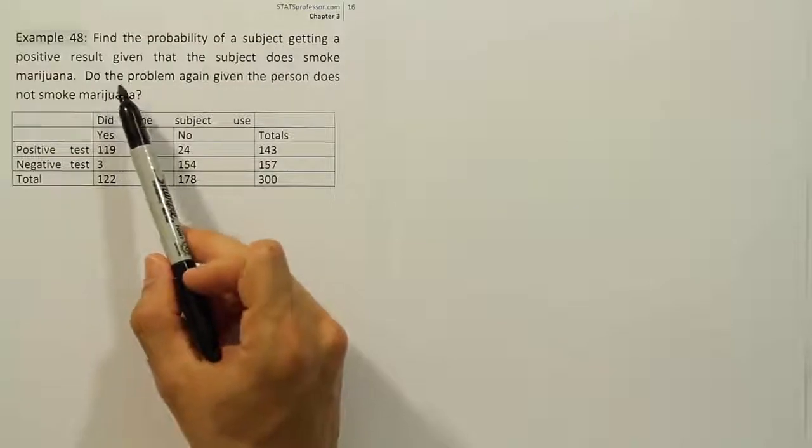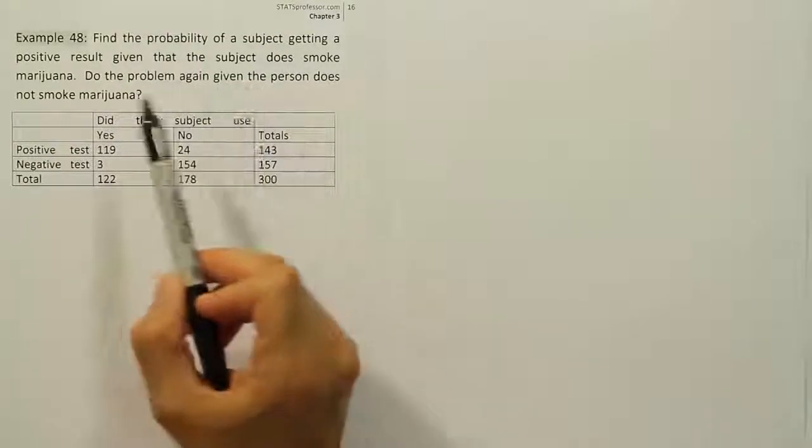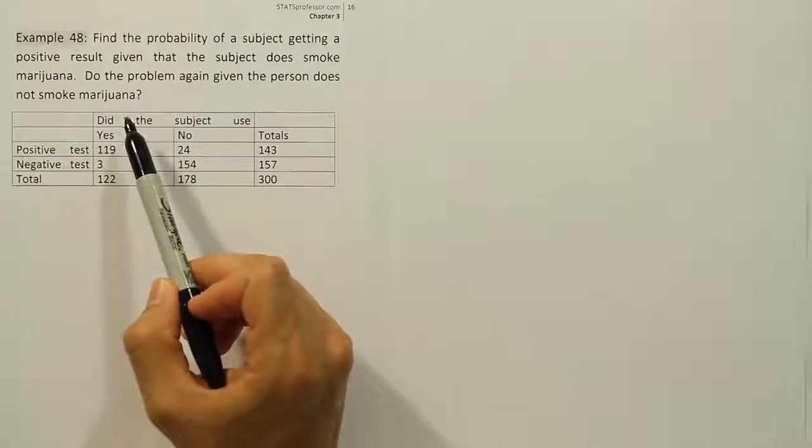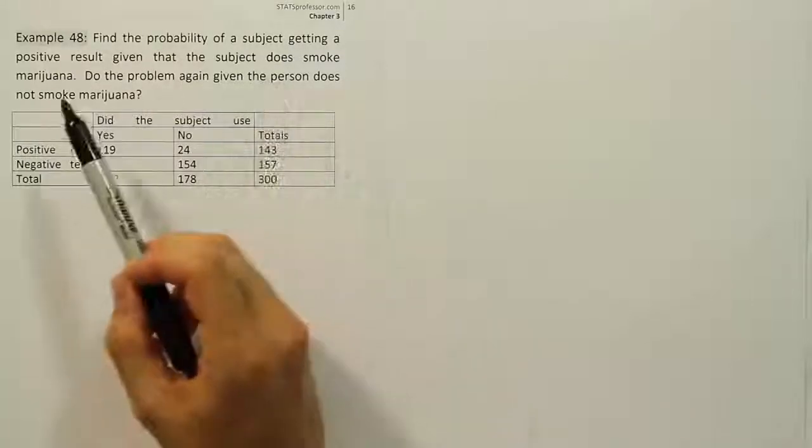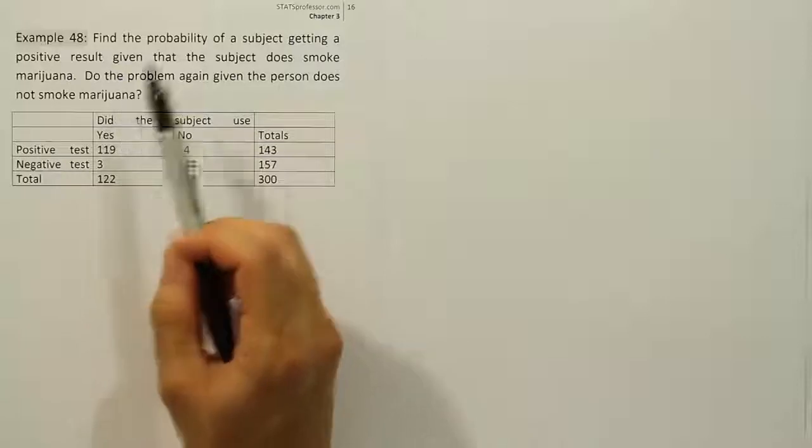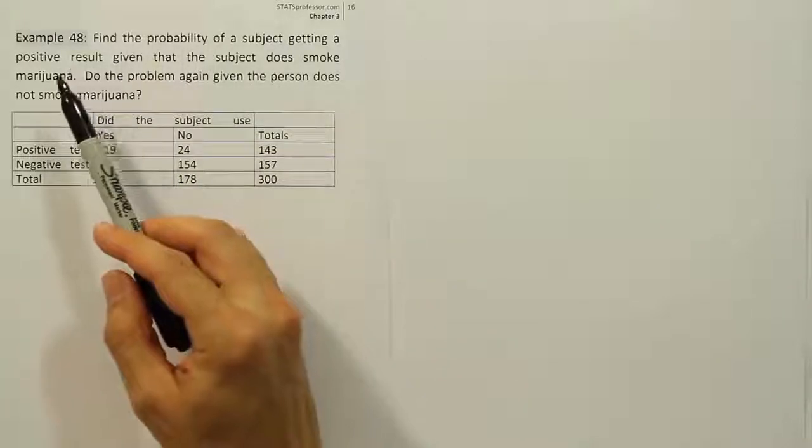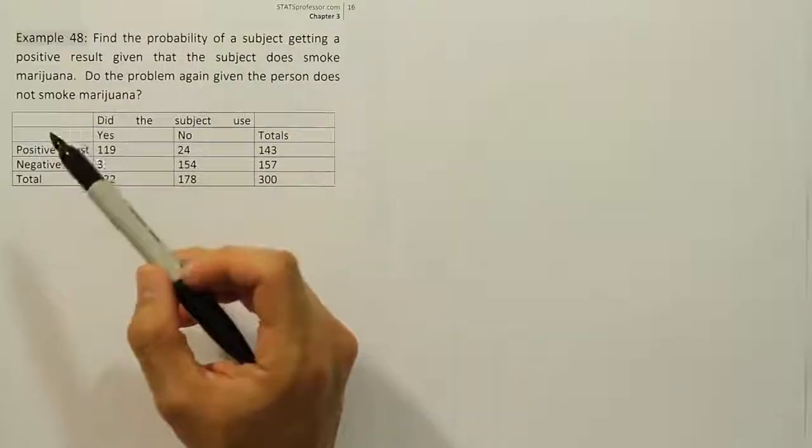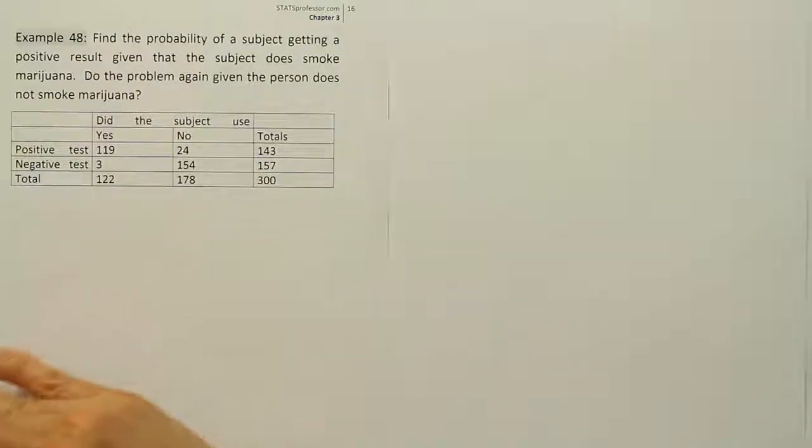And then we're looking at the second question here. It says do the problem again given the person does not smoke marijuana. So here we're looking at more the scenario with a false positive. If we know the person does not smoke marijuana, we should not get a positive result in the test, but that can happen of course sometimes. That would be the false positive error.